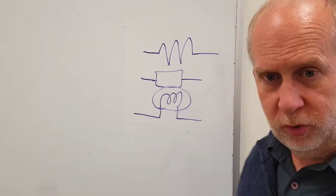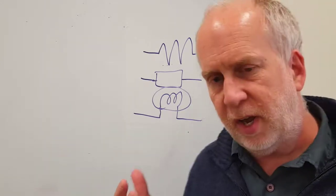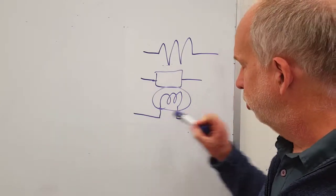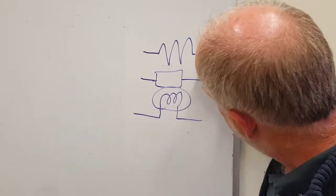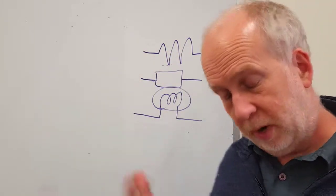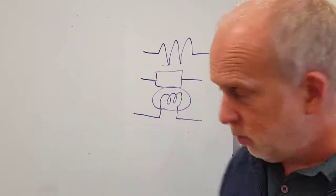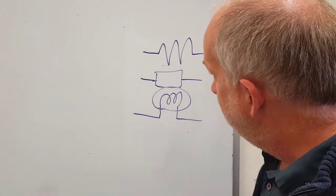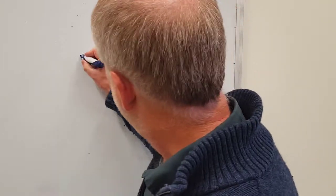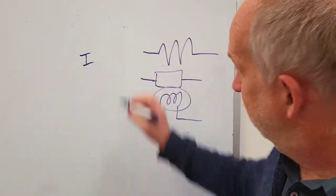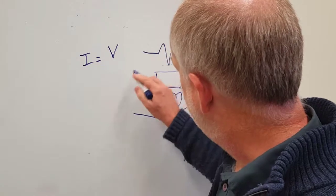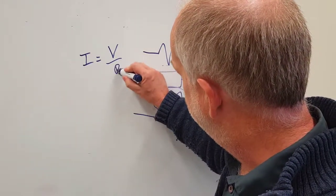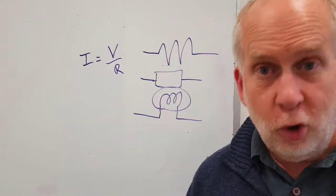For all these components, if it's ideal, we assume that the amount of current that flows through it depends on the voltage across it. If there's the same voltage on both sides of a resistor or a light bulb, no current flows through it. But if the voltage is higher on one side than the other, then a current will flow. The current is given by the voltage difference across the resistor — how much more voltage is on one side than the other — divided by the resistance. And that is the famous Ohm's law.